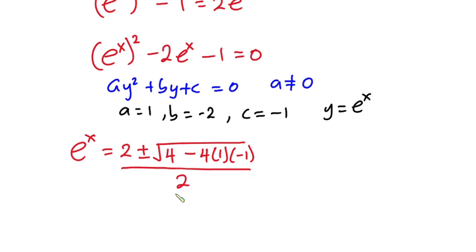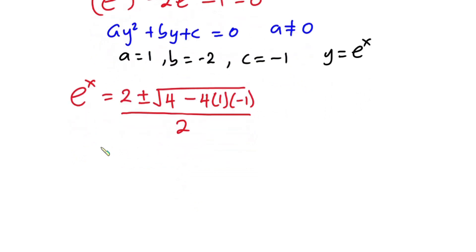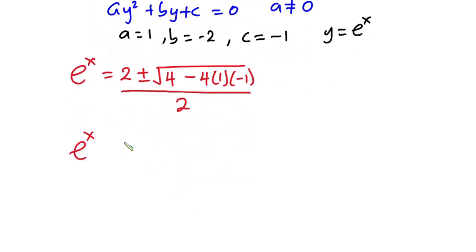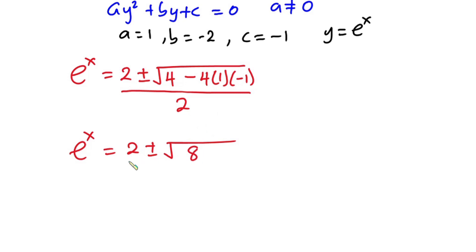So we have e to the power x is equal to 2 plus or minus the square root of: negative 4 times 1 is negative 4, times negative 1 is positive 4, so we have 4 plus 4, which is 8, all divided by 2.